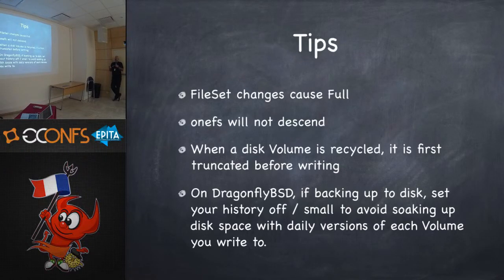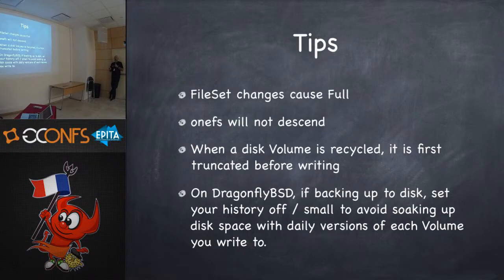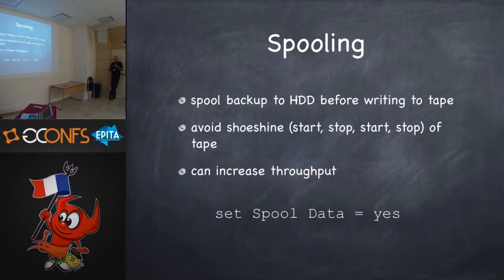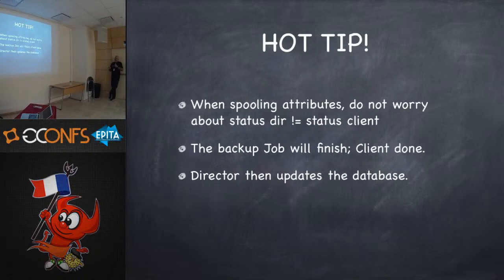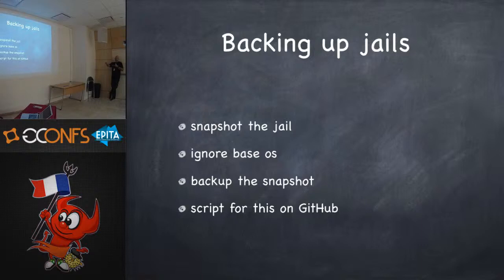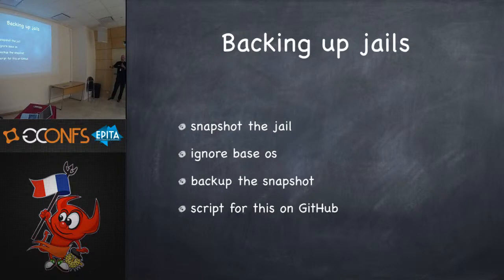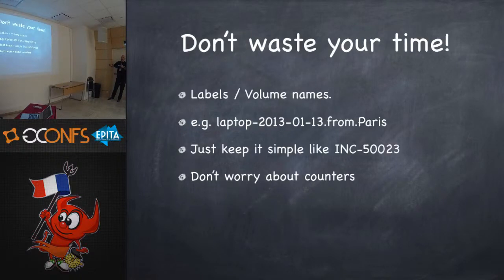You can have multiple file systems, but you may not want to back up your NFS mount — watch out for filesystem crossings. When a volume is recycled, you can tell it to truncate before running. On spooling, we talked about that before. When backing up jails, anytime you can, snapshot what you're going to back up — otherwise you can have files written at the beginning and end of the backup that aren't consistent. I put a script on GitHub to do this. Don't get fancy with volume labels — only Bacula has to reference them, so make it do the work.